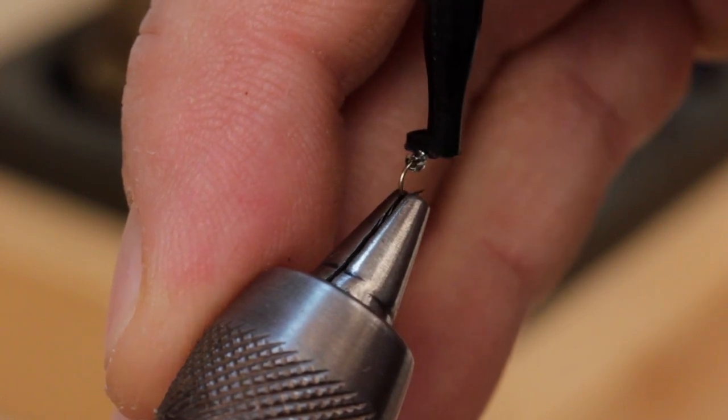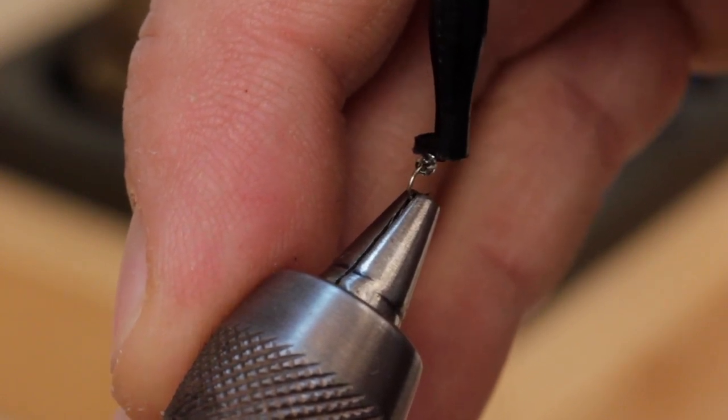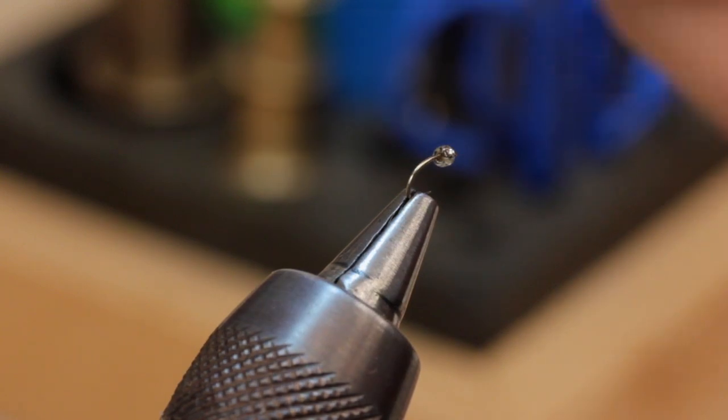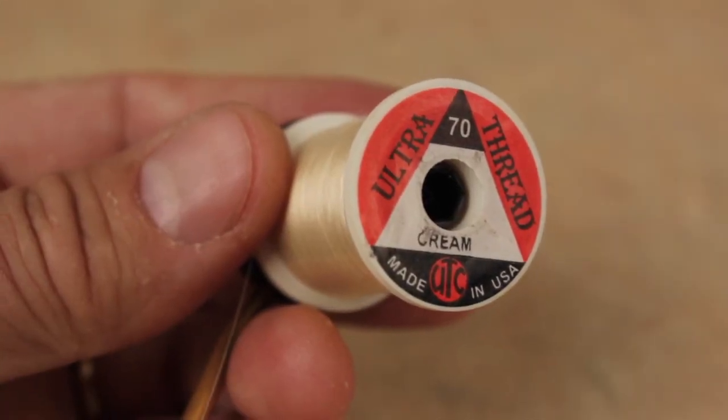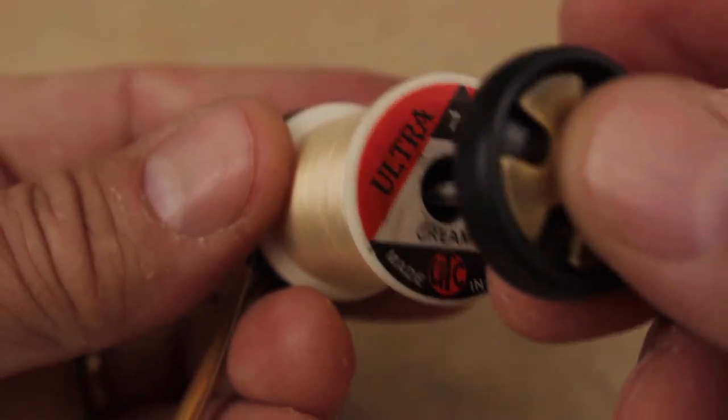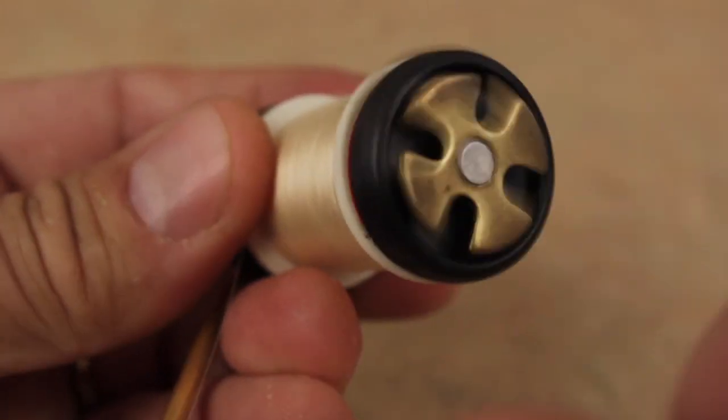Easy hackle pliers, of course, make it easier to perform all these tasks, including securing the hook in your vise. Cream colored 70 denier ultra thread is a good choice for the Mercury Midge. It both flattens and cords well.